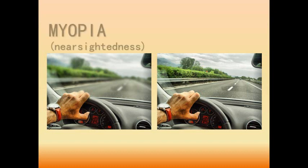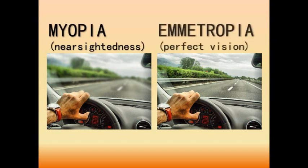The image on the left shows what things look like for a person with myopia, while the image on the right simulates what a person with perfect vision can see.